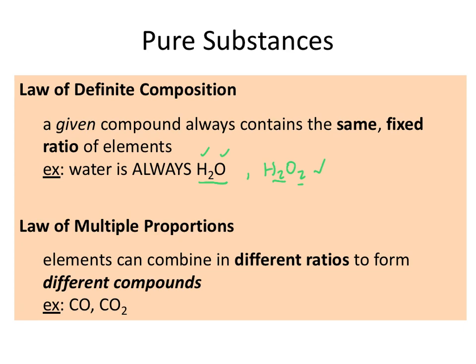The law of multiple proportions basically says that you can combine different ratios to produce different substances. As another example, we have CO and CO2. CO is carbon monoxide, CO2 is carbon dioxide. The ratios of carbon to oxygen in each of these compounds are unique, and each compound has different behaviors.